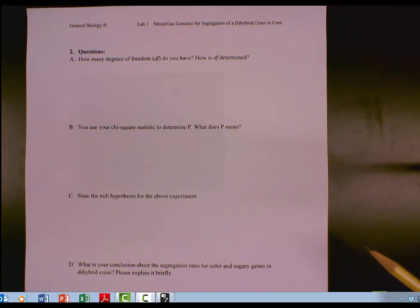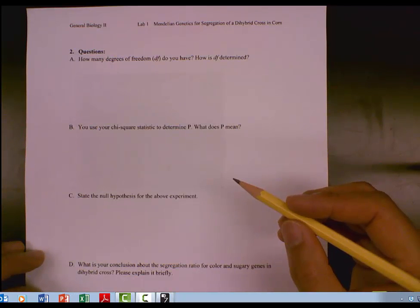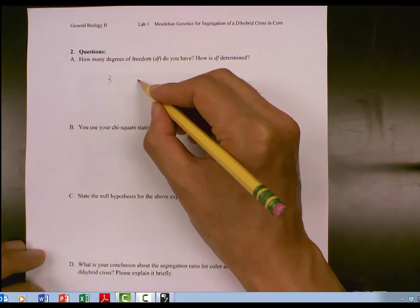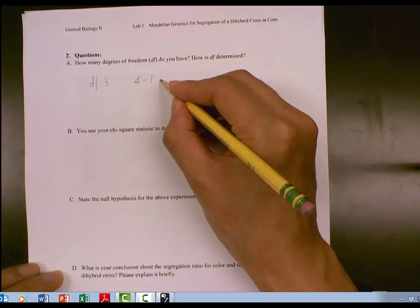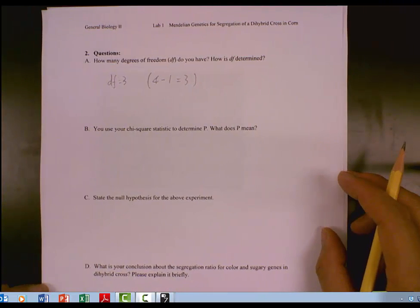After you finish the calculation on page 1, you are able to answer the questions on page 2. Question A, how many degrees of freedom do you have? In this case, we have four different phenotypes. The degrees of freedom equals 3. 3 is determined by 4 minus 1 equals 3. That's the process of getting degrees of freedom.